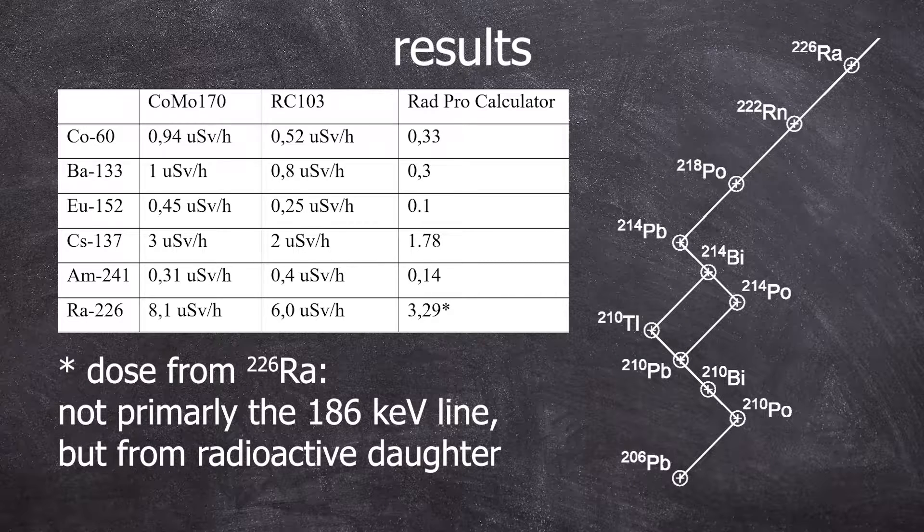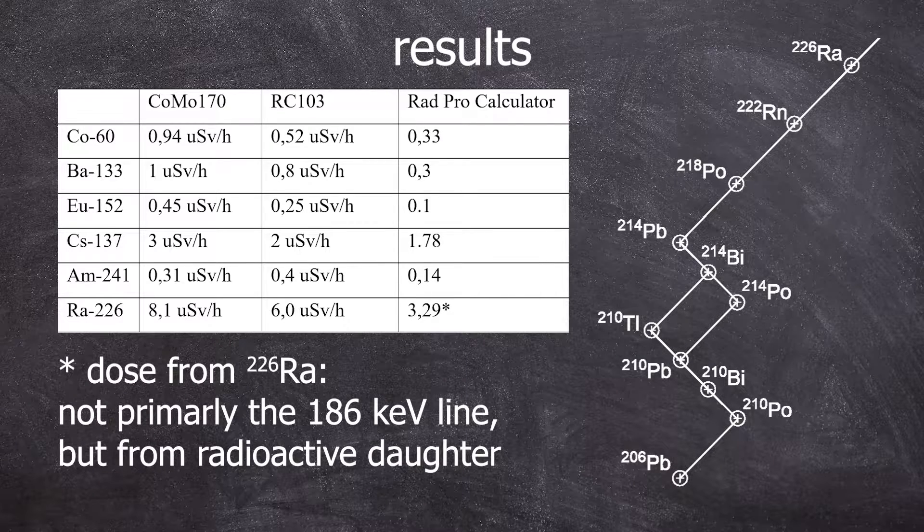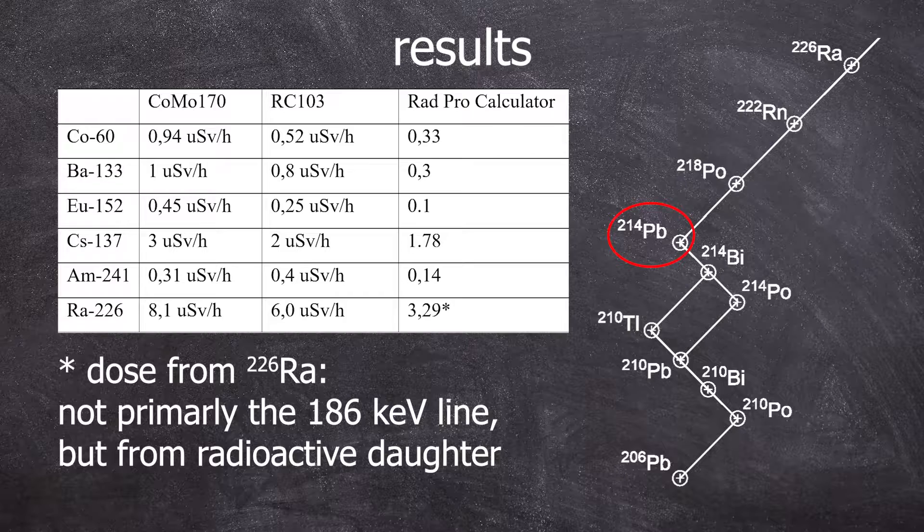The dose rate of a given radium sample does not come from the 186 keV gamma line from Radium-226, but after some weeks, it's in radioactive equilibrium with its daughter nuclides. Radon and polonium can be neglected in this case as they are basically pure alpha emitters, but a significant part of the dose comes from Lead-214 and Bismuth-214.